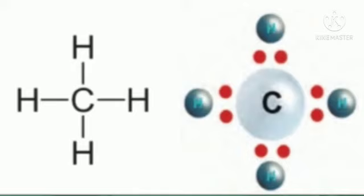In other words, a carbon atom can form 4 covalent bonds with other carbon atoms or atoms of different elements. When a carbon atom shares one electron each with other hydrogen atoms and forms 4 carbon-hydrogen bonds, a methane CH4 molecule is formed. Between carbon and hydrogen, covalent bonds take place.